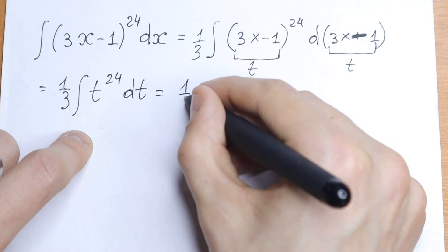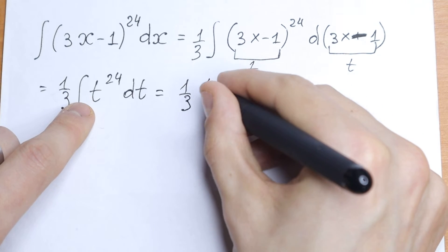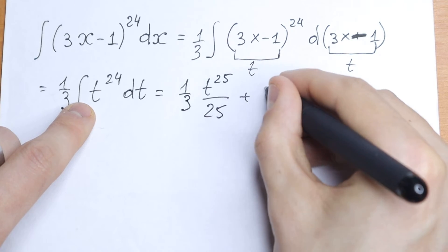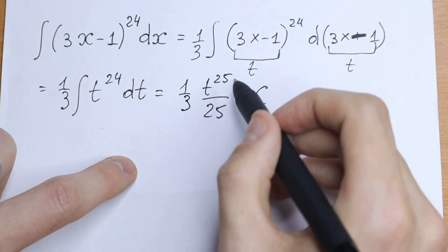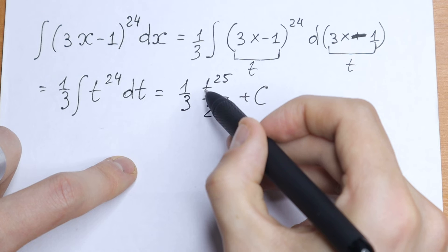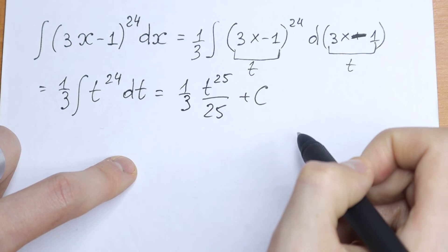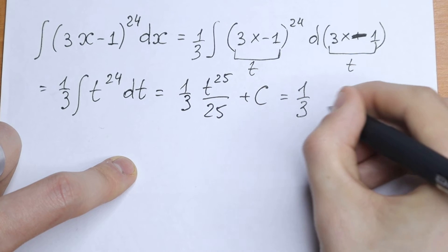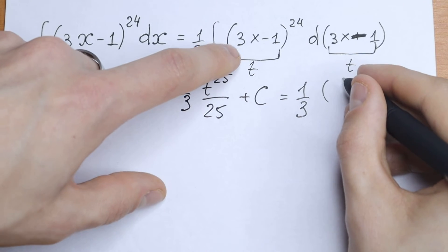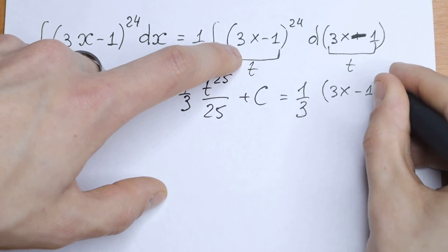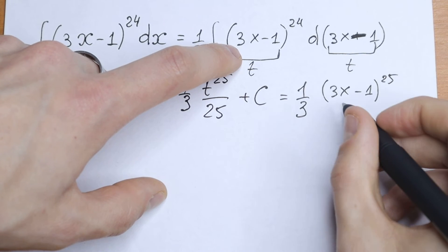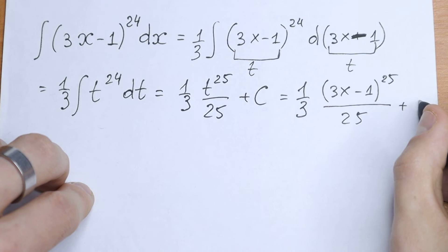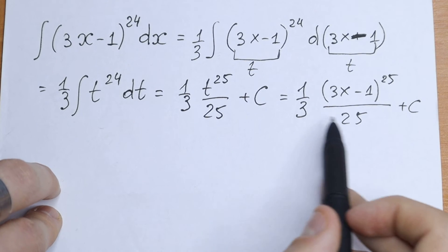We will have that this is equal to one-third. We will have t to the 25th power divided by 25, plus c. Going back to substitution, we have that t equals (3x-1). So we will have one-third times (3x-1) to the 25th power divided by 25, plus c.